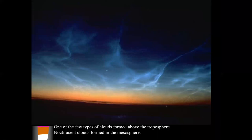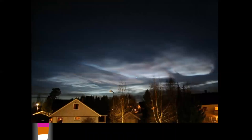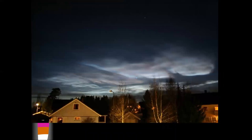These are noctilucent clouds — one of the few types of clouds formed above the troposphere. Sunlight is still shining on them so we can still see them from the ground. But remember, 99.9% of all clouds form in the troposphere. They look very ghostly and iridescent — sometimes referred to as mother of pearl clouds because of their different colors.